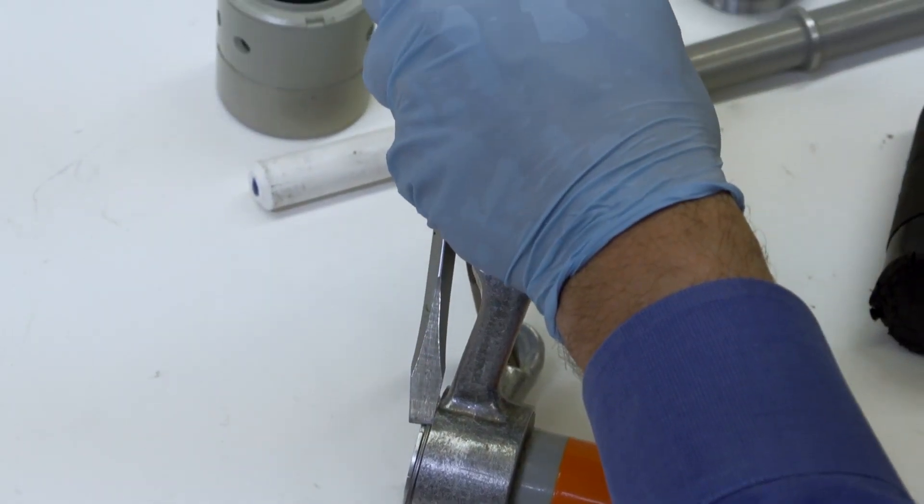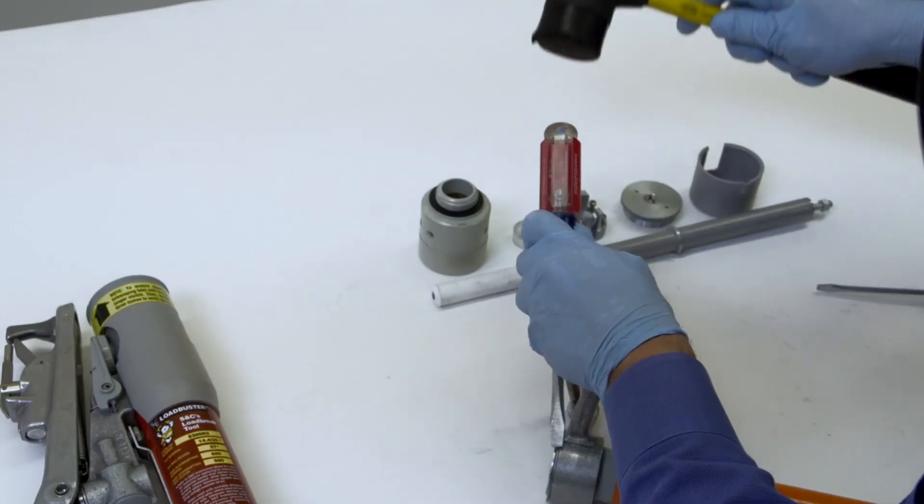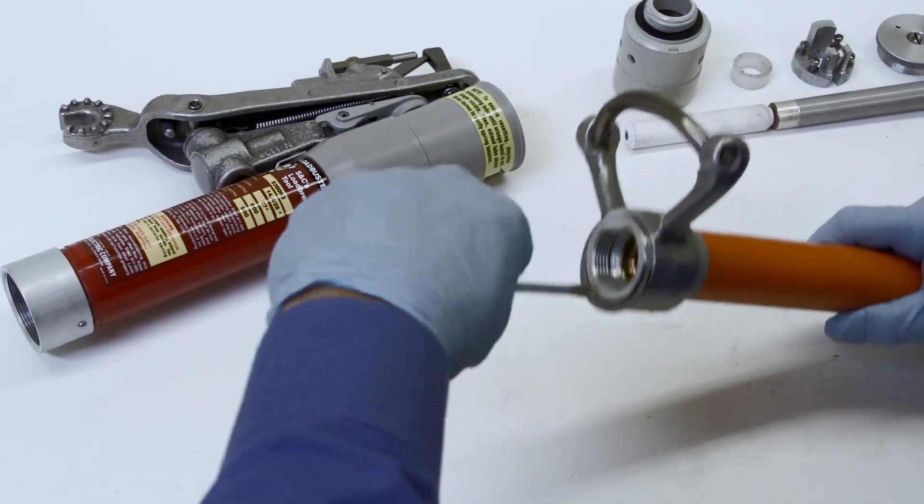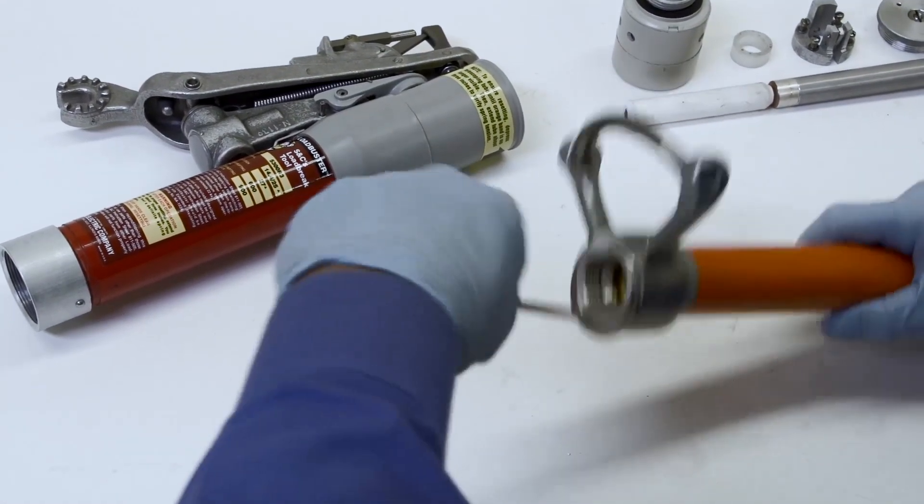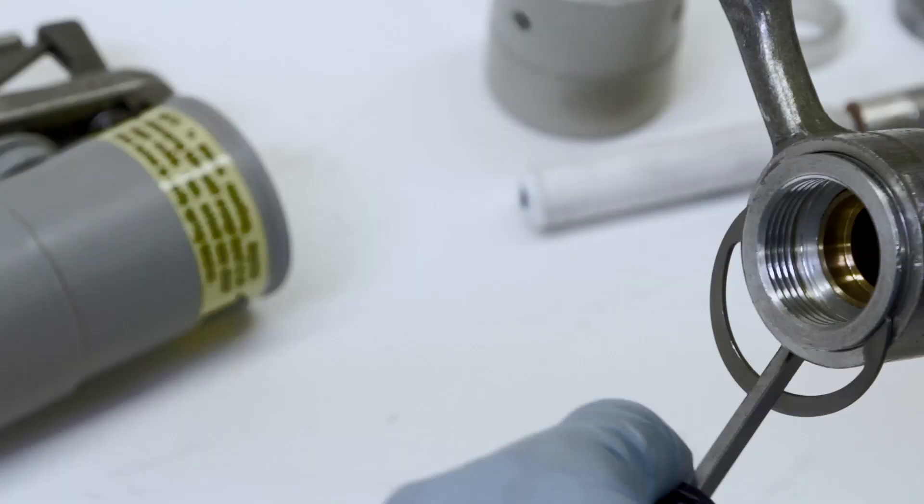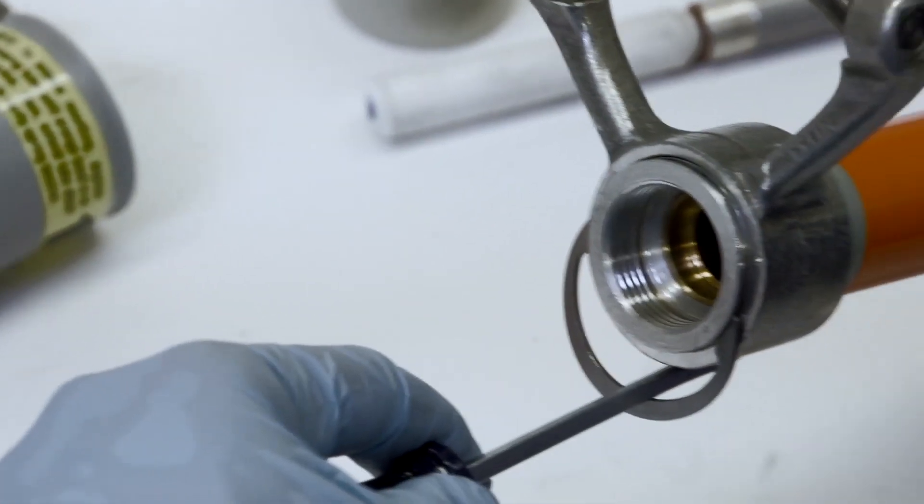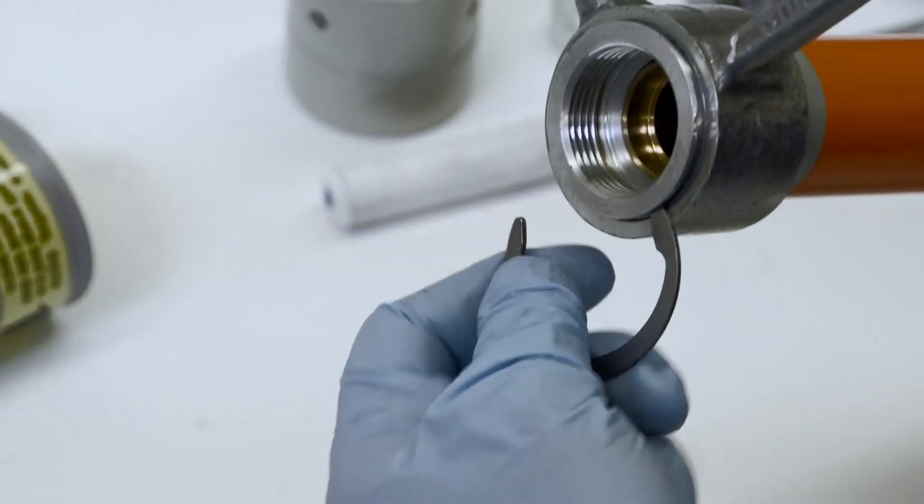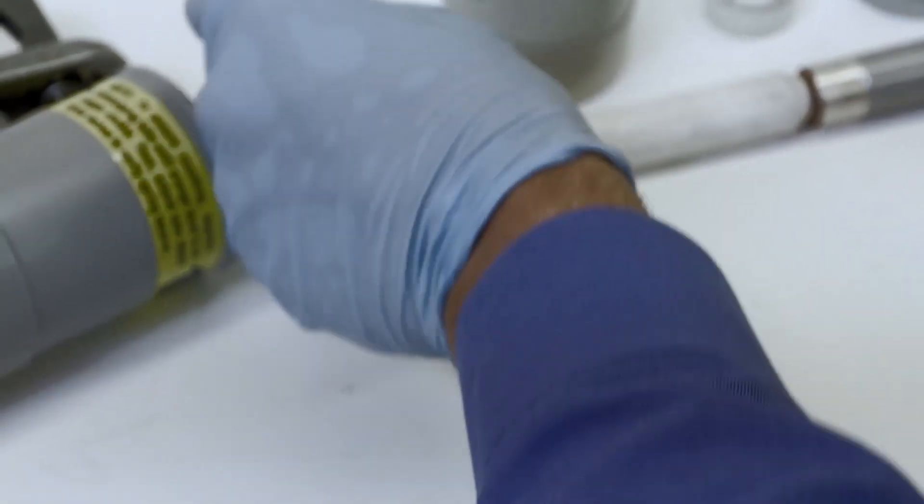Using a mallet and a screwdriver or other pry tool, tap the retaining ring with the mallet and screwdriver until there is enough room between the ring and the anchor assembly to fit the head of the screwdriver. Then insert the screwdriver into the gap and pry out the ring. Use care not to mar the surface of the inner tube assembly.